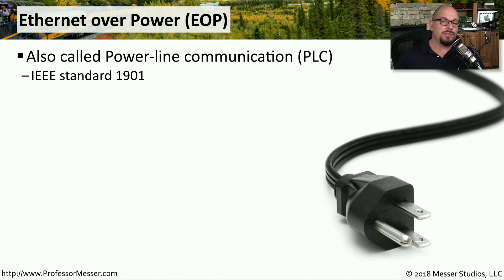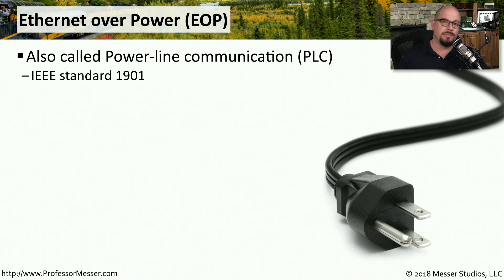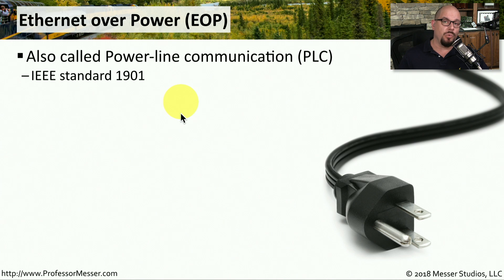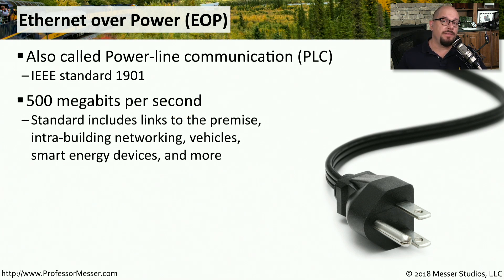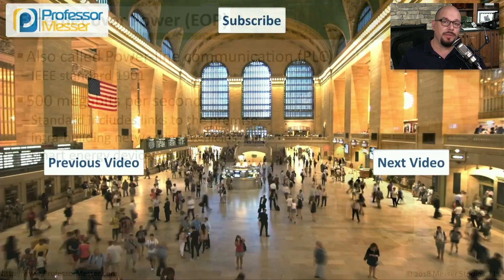Power over Ethernet powers devices using ethernet cables. Ethernet over Power, or EoP, is the reverse — it extends your ethernet network using the power cables already in your home. You may also hear this referred to as PLC, or power line communication, and it's IEEE standard 1901. EoP operates at 500 megabits per second and is designed to connect devices that normally wouldn't be on an ethernet network — for example, an electric car that, when plugged in to recharge overnight, would also connect to your ethernet network.